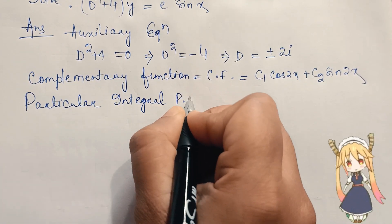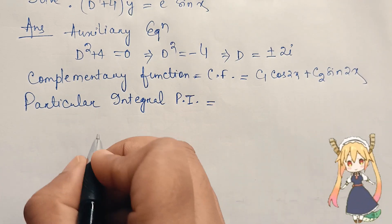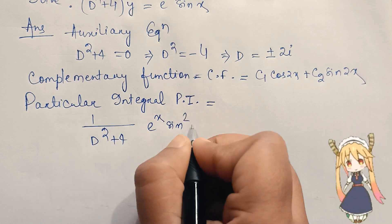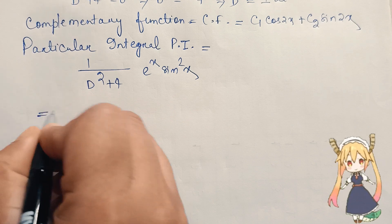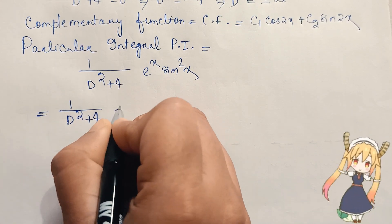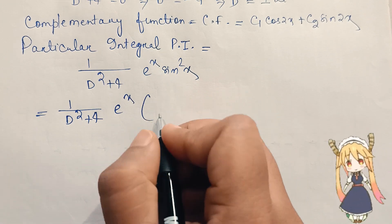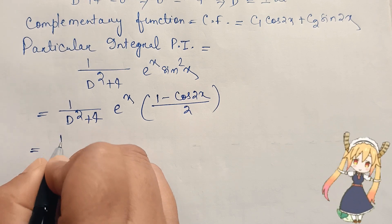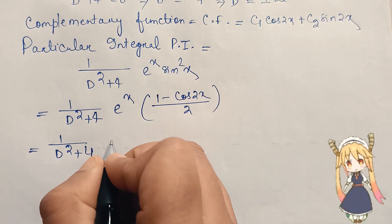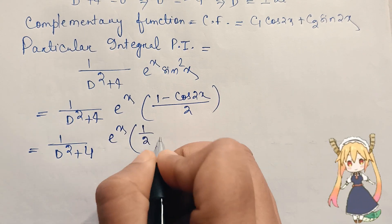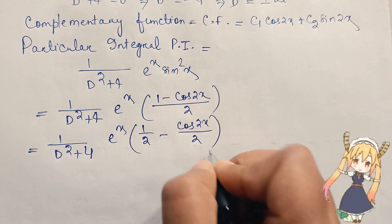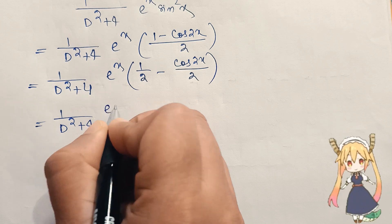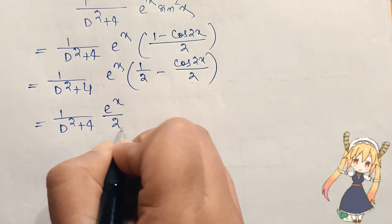The particular integral PI = 1/(D² + 4) of eˣsin²x. We apply the formula for sin²x = (1 - cos2x)/2. So this becomes 1/(D² + 4) · eˣ · (1/2 - cos2x/2), which we can write as 1/(D² + 4) · eˣ/2 minus 1/(D² + 4) · eˣcos2x/2.